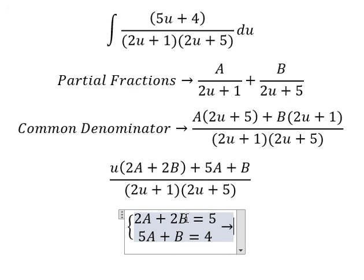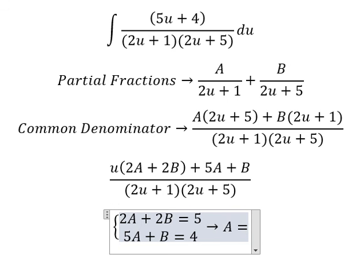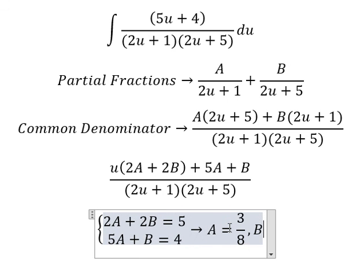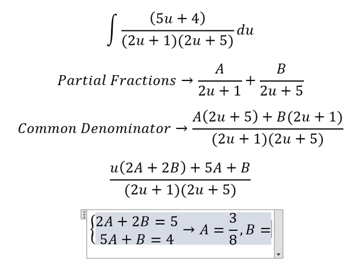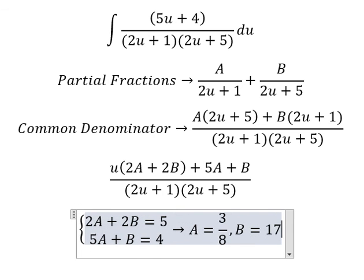Now we need to find the solutions of A and B. A equals 3 over 8 and B equals 17 over 8. I will put these values in here.